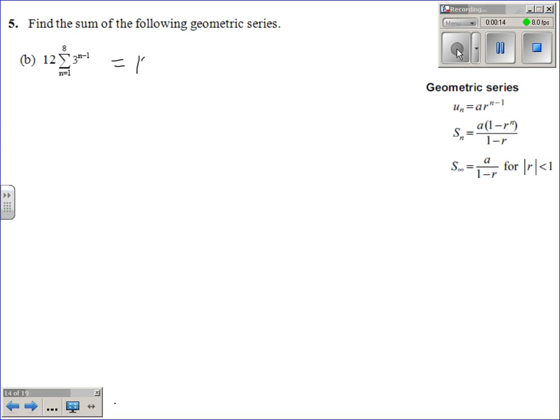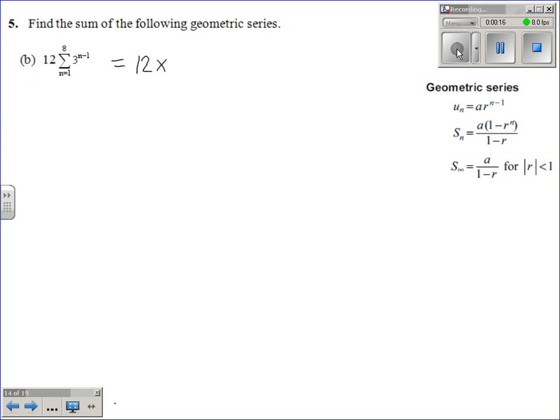What you've got here, this means you've got 12 times the sum of the first term, so when n is 1, right until the 8th term, and then your nth term is given by 3 to the power of n minus 1.